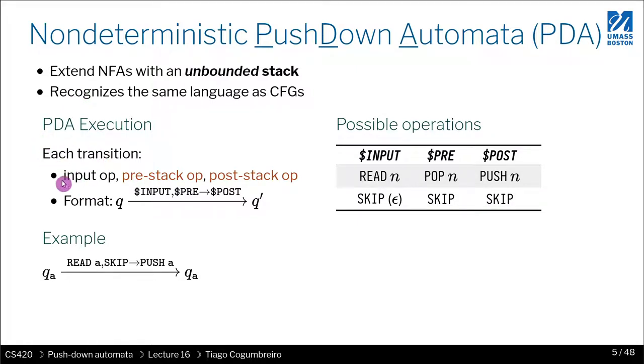Each transition now is extended with two stack operations. One is what you do before the stack and the next one is what you do after the stack. You can think of it as a precondition or a post condition, or you can also interpret it as reading from the stack and writing to the stack. Although they both mutate the stack, both of these operations.